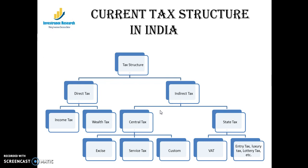Central taxes go to the central government and state taxes go to state governments. Central taxes include excise, service tax, and customs. State taxes include VAT, entry tax, and luxury tax. The plan is to bring all these indirect taxes under GST — the government collects money under GST and then distributes it between the center and the states.